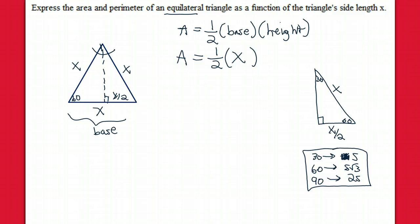And so whatever is here for opposite to 30, we take that and multiply it by root 3. So we take x over 2 and multiply it by root 3, and that's the height of the triangle. x over 2 root 3.